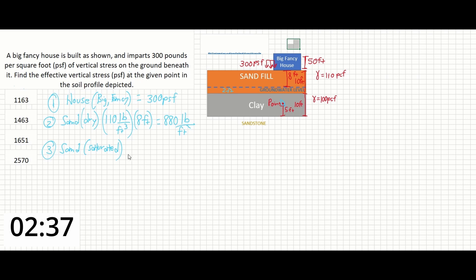First, we're going to subtract 110 pounds per cubic foot by 62.4 pounds per cubic foot, which is the unit weight of water. You can look that up in the reference manual if you don't have that memorized. We're going to multiply it by the saturated depth of 2 feet, which gives us about 95.2 pounds per square foot.